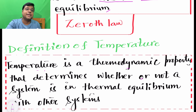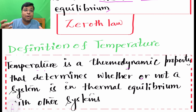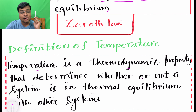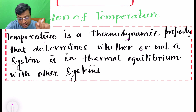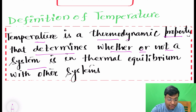If asked what temperature is, you might say it is a measure of degree of hotness or coldness — but this is not the classical thermodynamics definition, because it defines temperature in terms of heat. Temperature is a thermodynamic property and must not be defined using the concept of heat. Therefore, based on the Zeroth Law, temperature is defined as: a thermodynamic property that determines whether or not a system is in thermal equilibrium with other systems.